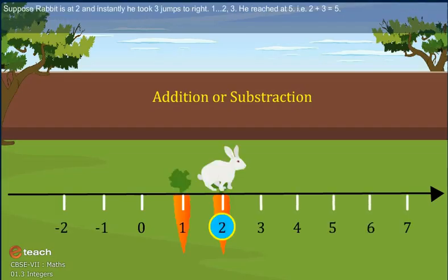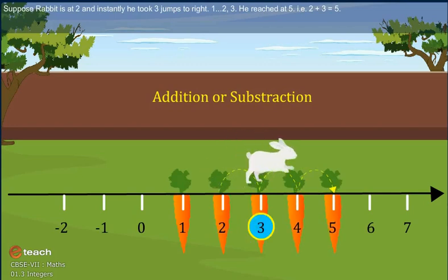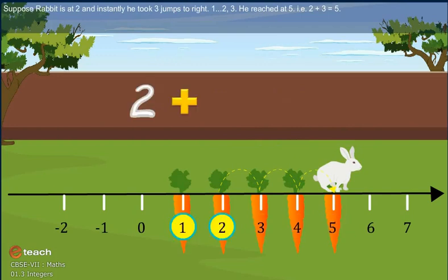Suppose rabbit is at 2. And instantly, he took 3 jumps to the right. 1, 2, 3. He reached at 5. That is, 2 plus 3 is equal to 5.